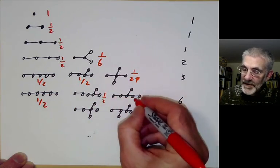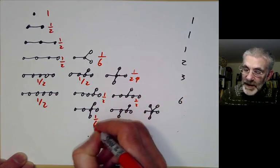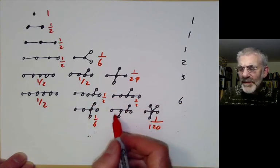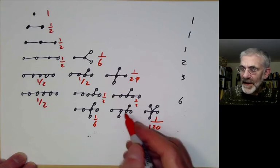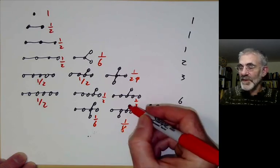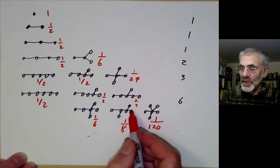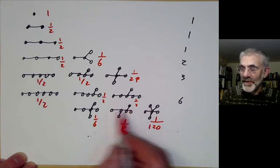Here we get a half, here a half, here one over six again, here one over 120. This one you have to think about. It actually has eight symmetries because we can twiddle these two points, twiddle these two points, or swap it from left to right.